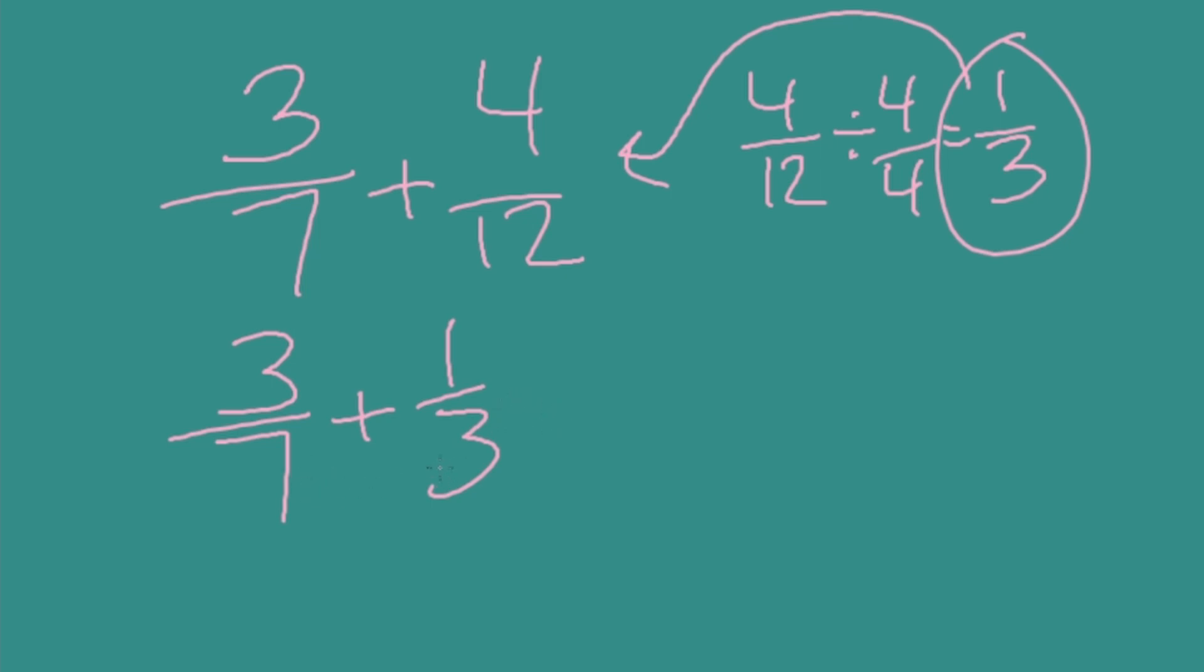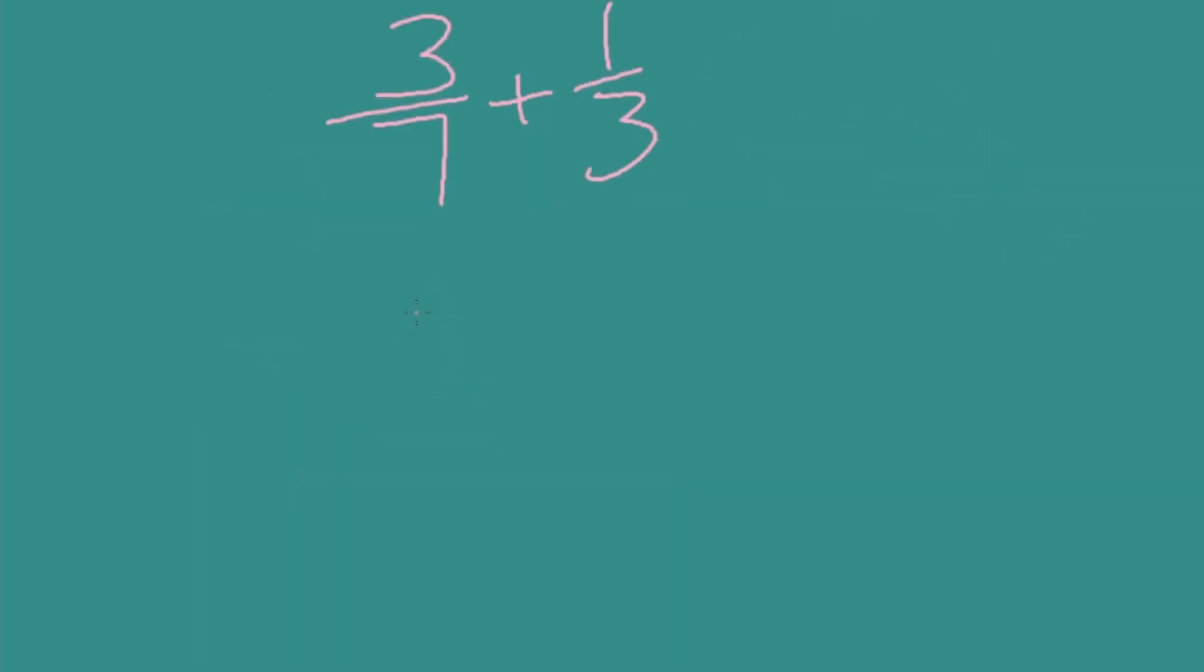All right. I could list multiples of both of these guys, or I could just multiply them together. Since I've already reduced, I'm going to try multiplying them together. My new denominator is going to be 7 times 3, or 21. So I'm going to rewrite 3/7 with a denominator of 21. And we got there by multiplying by 3, our other denominator. So 7 times 3 is 21. We do the same to the top. 3 times 3 is 9. This is an equivalent fraction for 3/7.